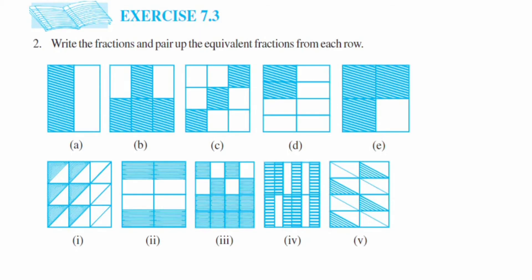Hey everyone, here I'm doing Exercise 7.3, second question. This is from Class 6 and the chapter is Fractions. The question is: write the fractions and pair up the equivalent fractions from each row.